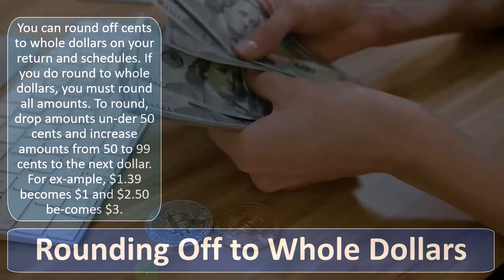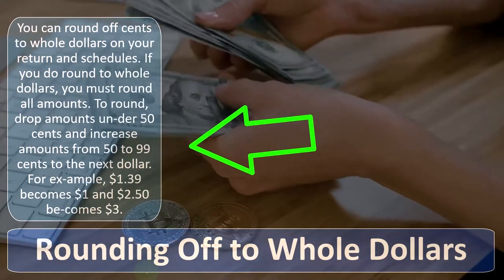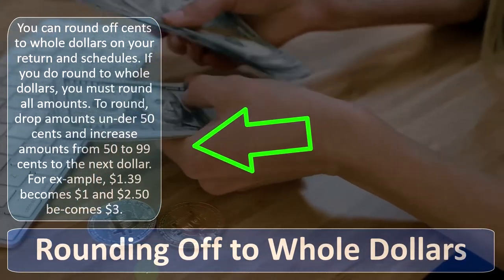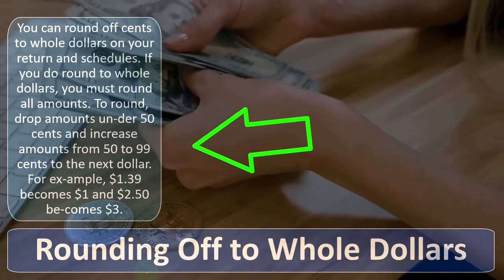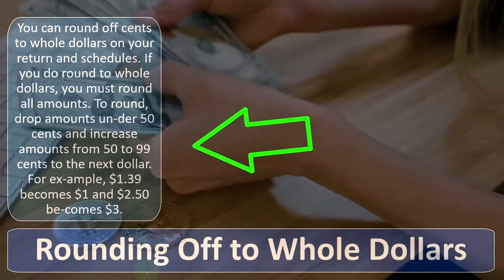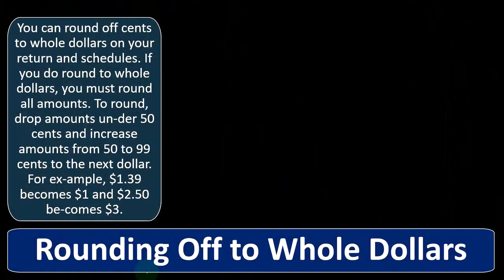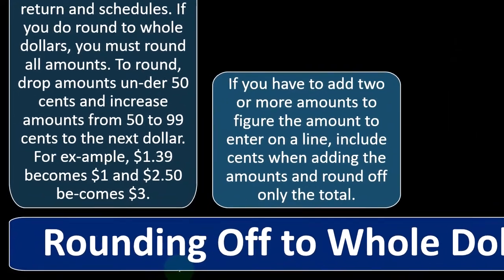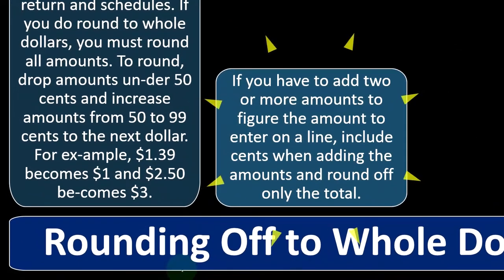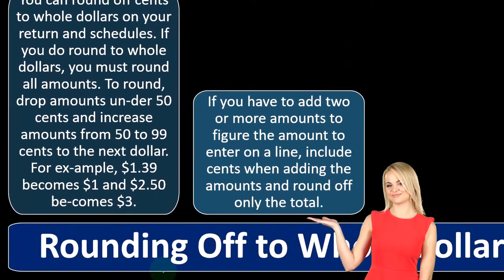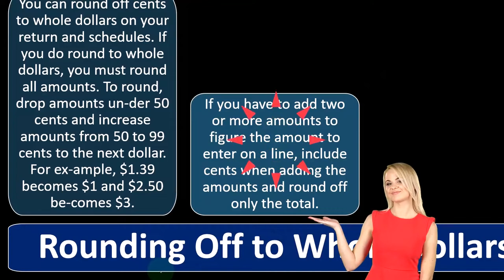To round: drop amounts under 50 cents and increase amounts from 50 to 99 cents to the next dollar. For example, $1.39 becomes $1, and $2.50 becomes $3. If you have to add two or more amounts to figure the amount to enter on a line, include cents when adding the amounts and round off only the total.